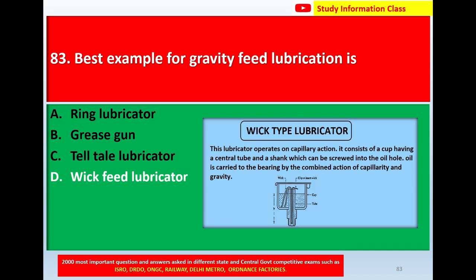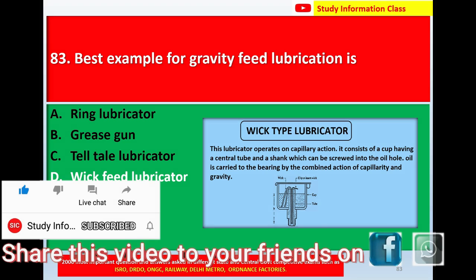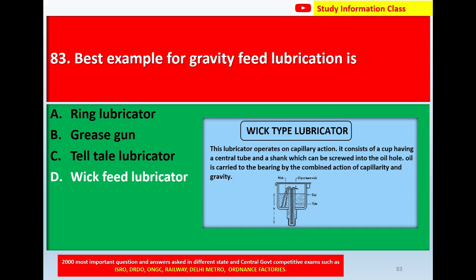The wick type lubricator operates on capillary action. It consists of a cup having a central tube and a shank which can be screwed into the oil hole. Oil is carried to the bearing by the combined action of capillary and gravity. So the answer for question 83 is option D: wick feed lubricator.